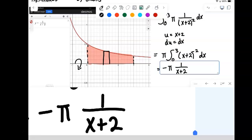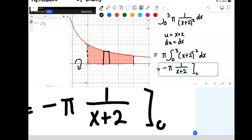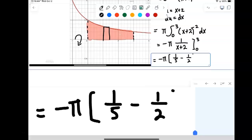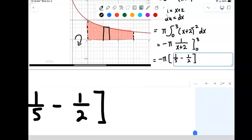And then we evaluate that between our two limits of integration, 0 to 3. And just go ahead and work that out. So negative pi outside. On the inside, we're going to have plug-in 3, that'll be 1 fifth minus plug-in 0, 1 half. So we just do the subtraction for the fractions. 1 fifth minus 1 half, you get a common denominator. The 1 fifth will become 2 tenths, 1 half will become 5 tenths. 2 minus 5 will be negative 3 over 10 times the negative pi will give us a positive 3 pi over 10.